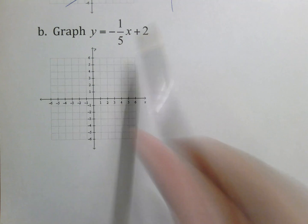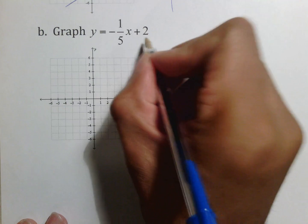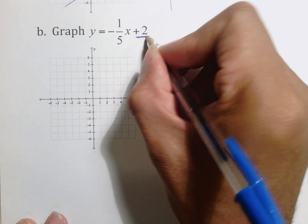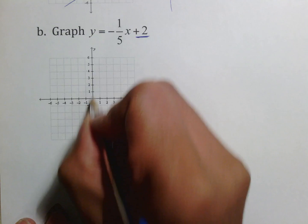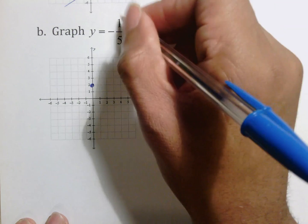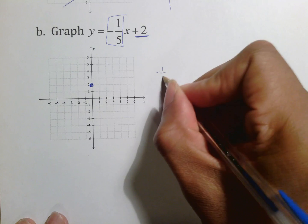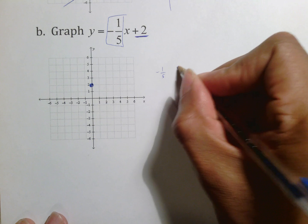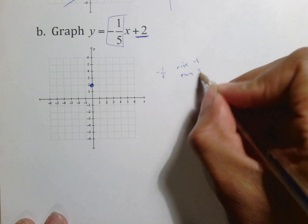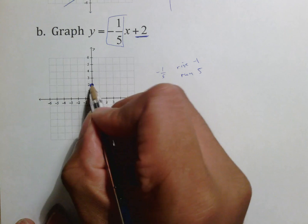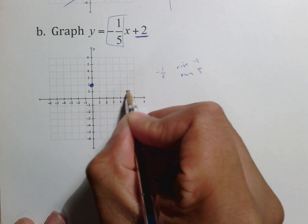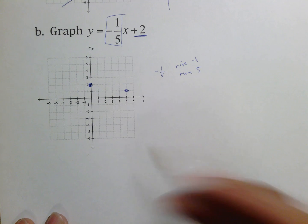Graph y equals negative one-fifth x plus two. The first thing is to identify b — my y-intercept is positive two, so I go on the y-axis to where positive two is. The second thing is my rise over run is negative one-fifth, which means rise negative one (go down one), run five to the right. From the y-intercept, I go down one, then over one, two, three, four, five — second dot — then use a straight edge.